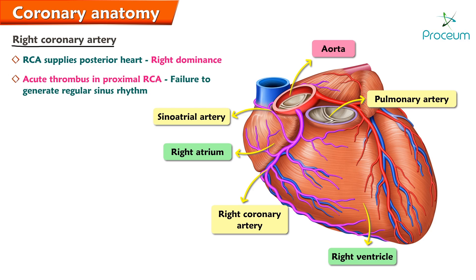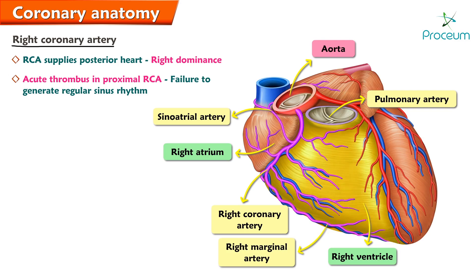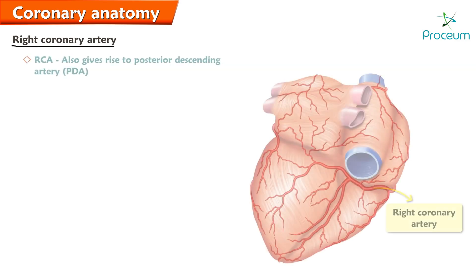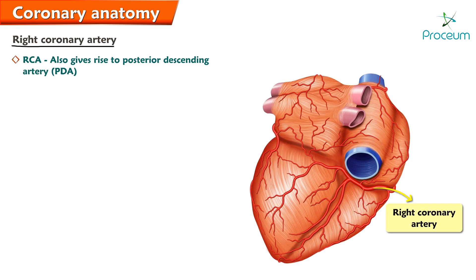Acute thrombus in the proximal RCA may result in failure to generate regular sinus rhythm. The right marginal artery originates from the right coronary artery and serves as the main supply to the right ventricle.